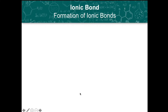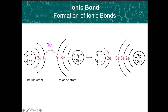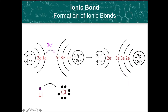In another example, we have the transfer of electrons from a lithium atom going to a chlorine atom. Lithium has one electron on its outermost shell, while chlorine has seven electrons in its outermost shell and needs to gain one more to achieve a noble gas configuration. This results in lithium transferring one electron to chlorine, forming the lithium ion and the chloride ion.